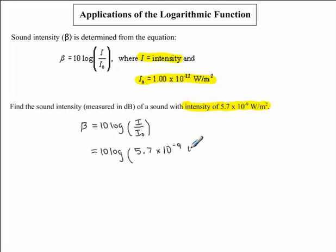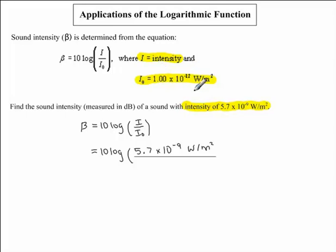Our units are watts per meter squared. Now we need to divide this by i0. We are told that i0 is equal to the constant 1.00 times 10 to the exponent negative 12, so we replace the variable with that value: 1.00 times 10 to the exponent negative 12 watts per meter squared. Now we close our brackets.